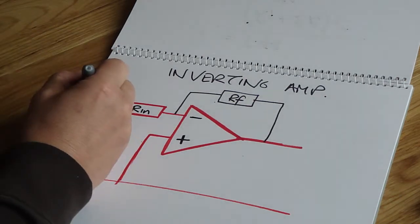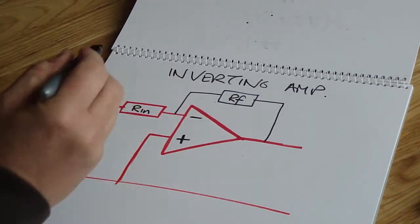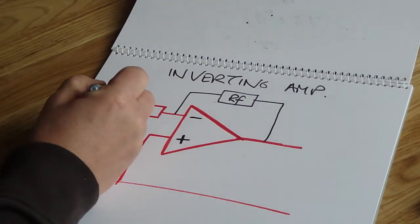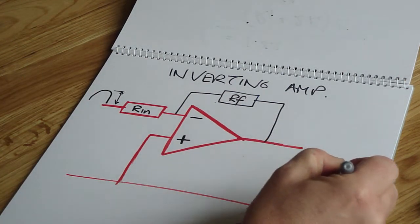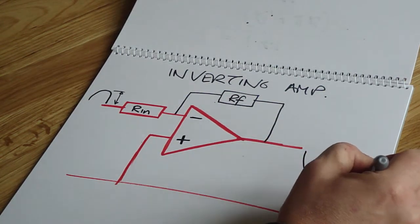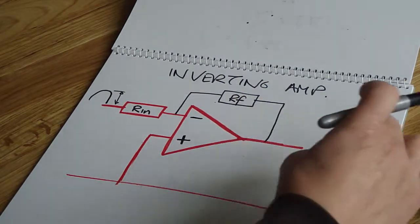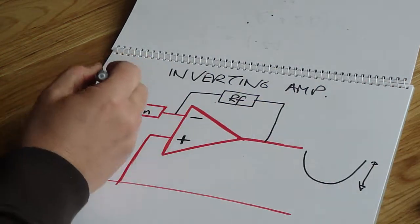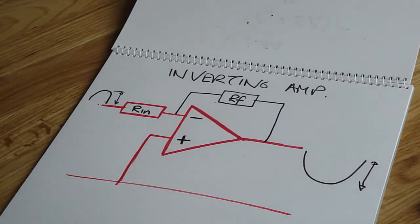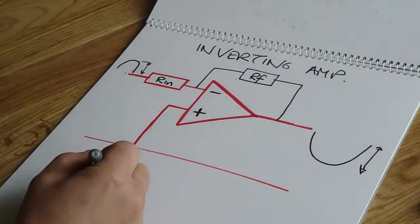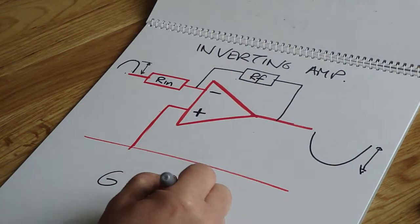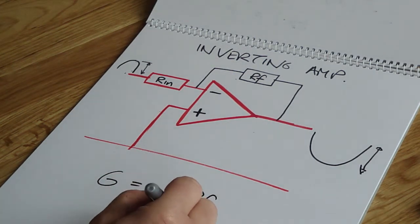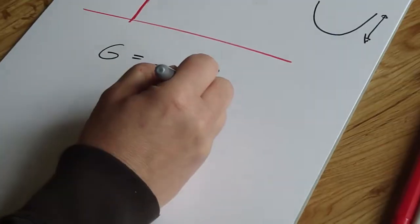As it's an amplifier, if we put this signal in which has got a particular voltage, the amplitude, at the output we will get an inverted and amplified voltage. The size of that height compared with this is the amount that's amplified. The formula for gain is equal to minus RF over Rin.